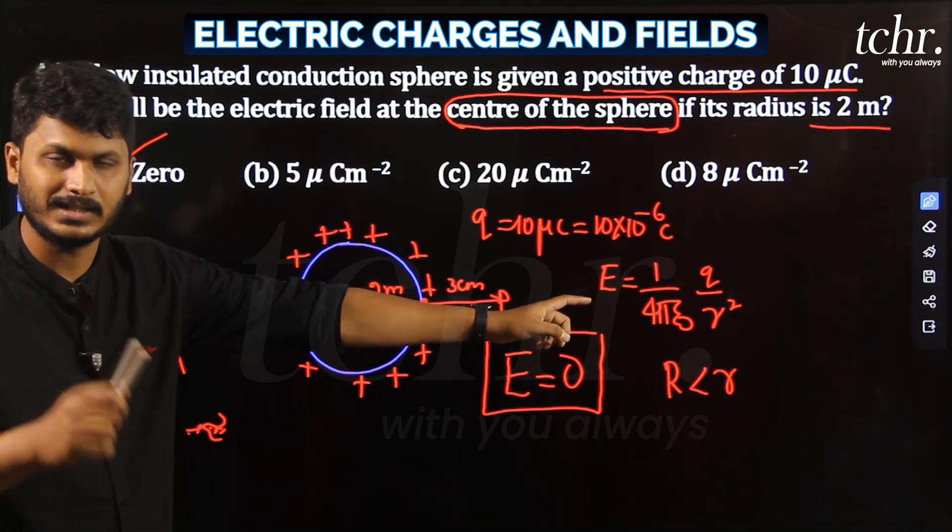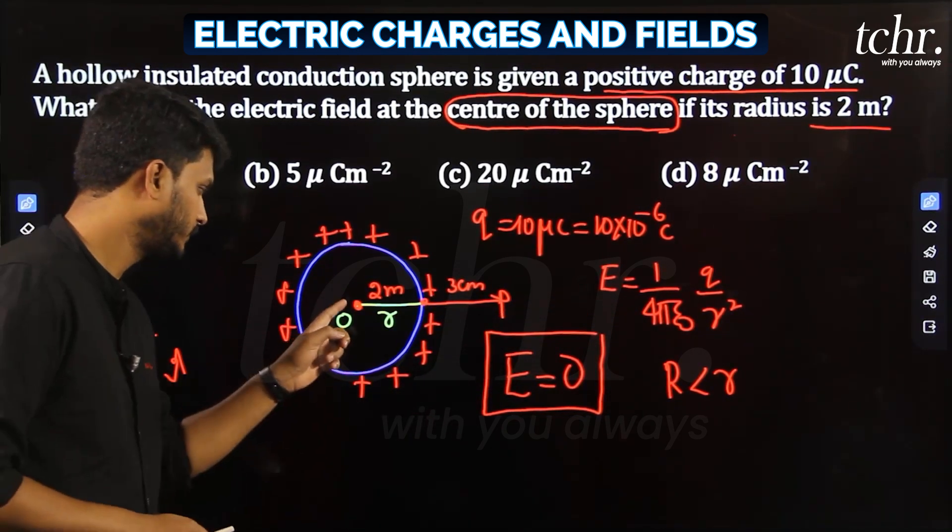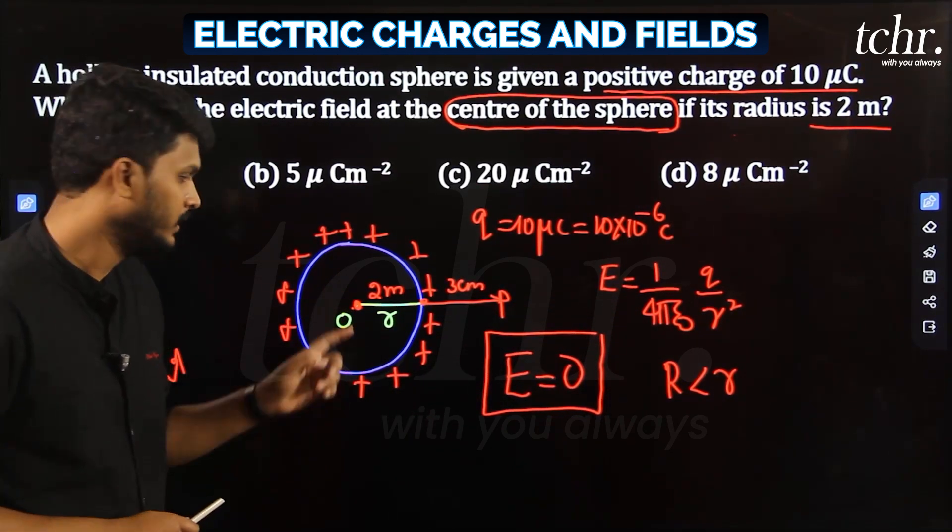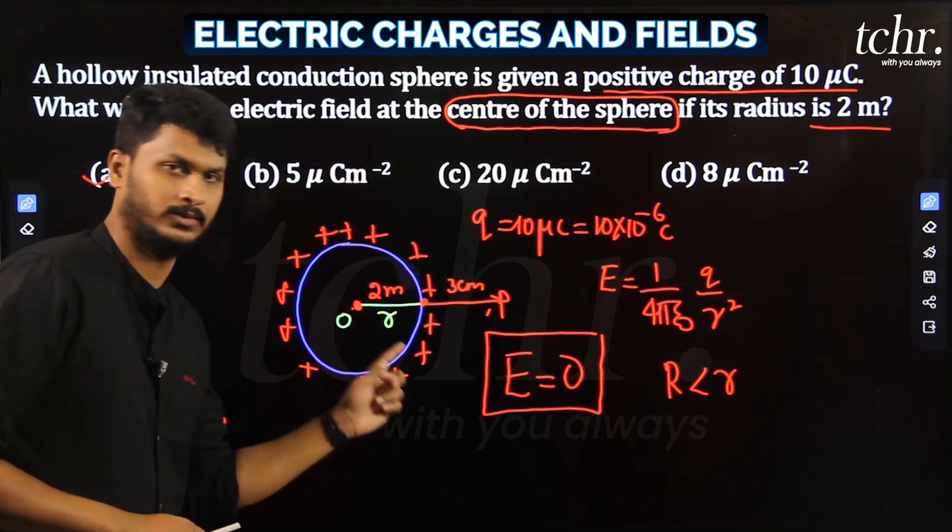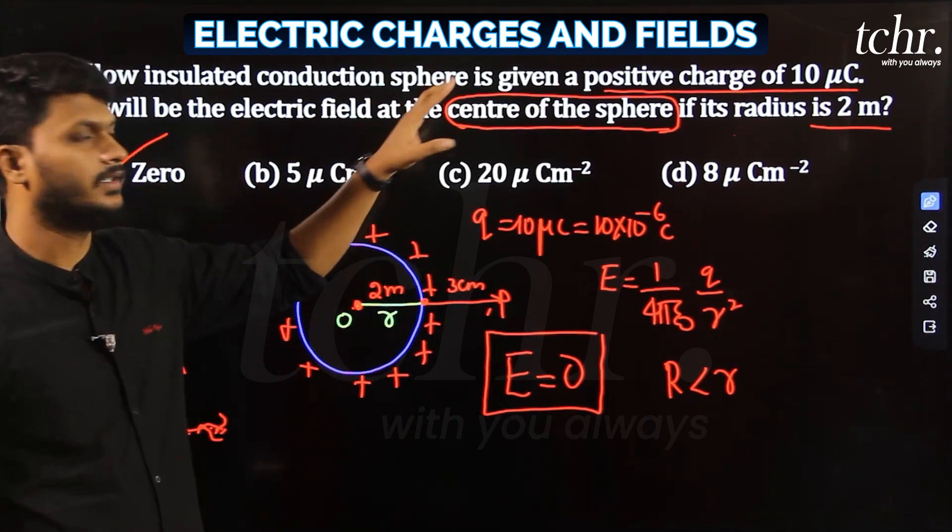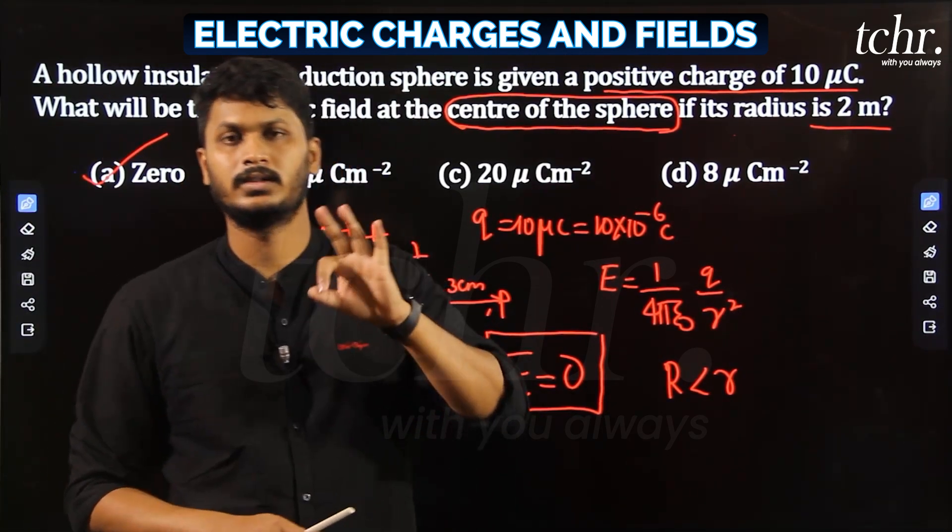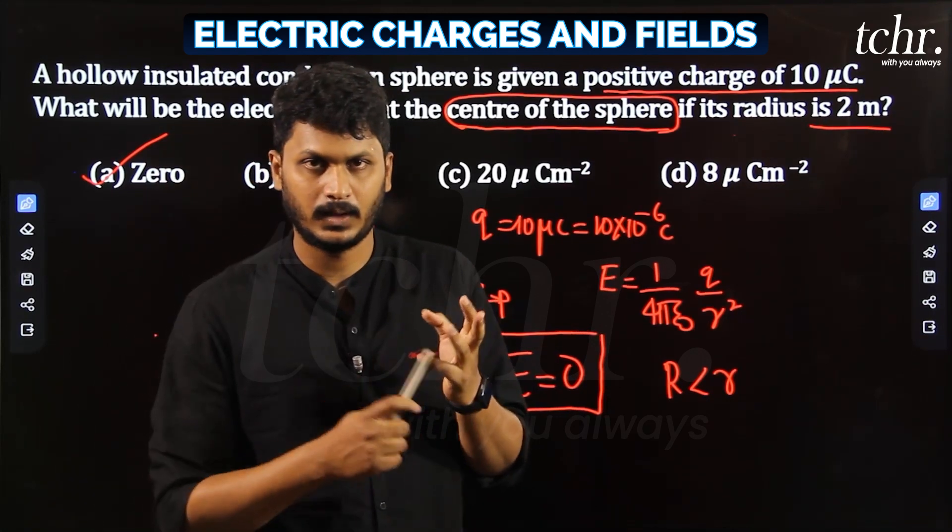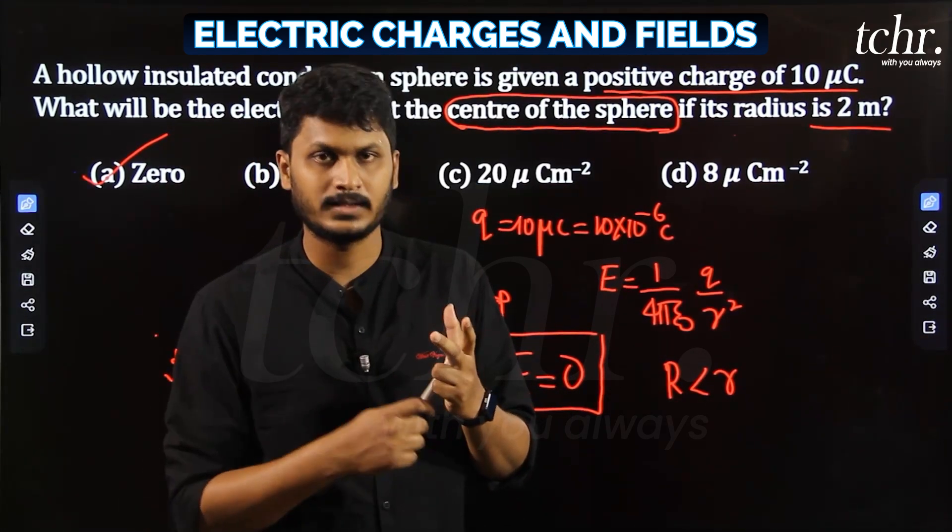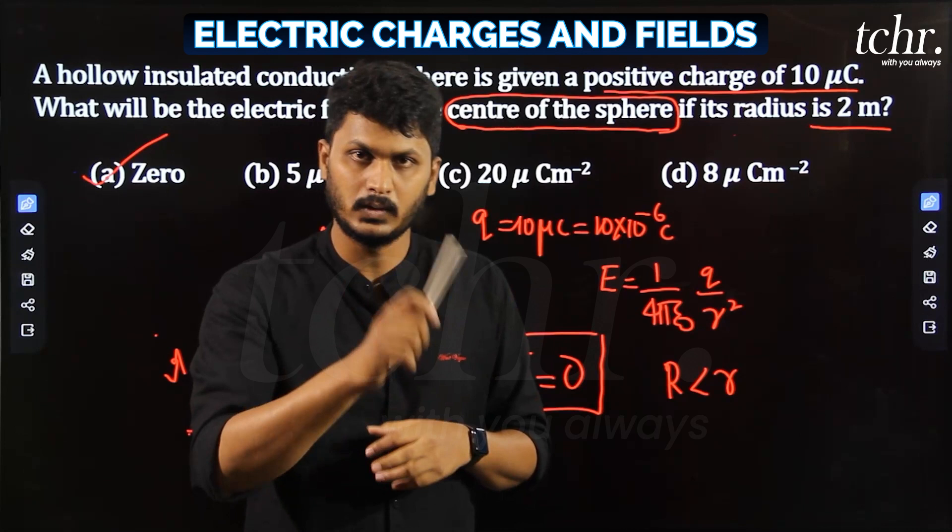Thinking 3 centimeters from the surface is wrong. Distance should always be measured from the center of the conductor. So logically, this question helps you solve three different kinds of questions: What if electric field is inside? What if it's on the surface? What if it's outside?